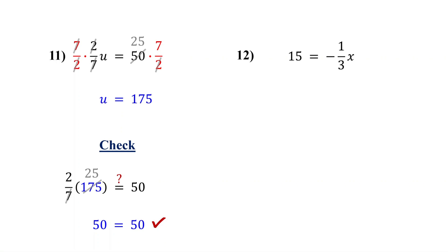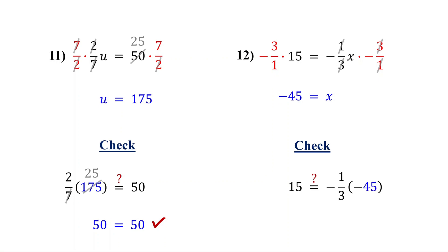Try the last example with a negative fraction. Here, x is being multiplied by negative 1/3. So to isolate x, multiply both sides by the reciprocal of negative 1/3, which is negative 3 over 1. Remember, when you take the reciprocal of a negative fraction, the negative sign stays with the fraction. On the right, the fractions cancel out — the negatives become positive — and we are left with just x. On the left, negative 3 times 15 is negative 45. So the solution is x equals negative 45. To double check, plug in negative 45 for x: negative 45 and 3 reduce to negative 15, then negative 1 times negative 15 is positive 15. So it checks out.